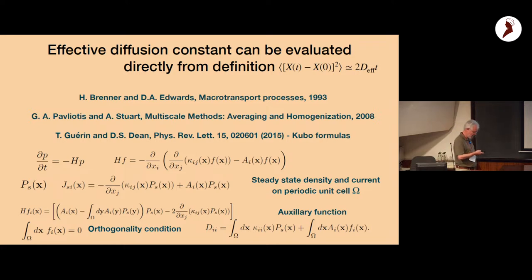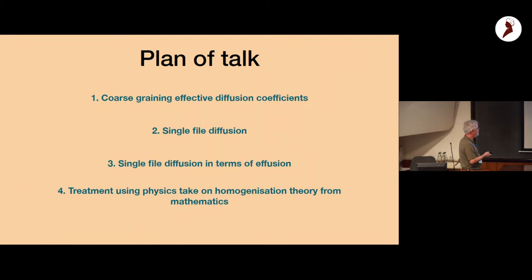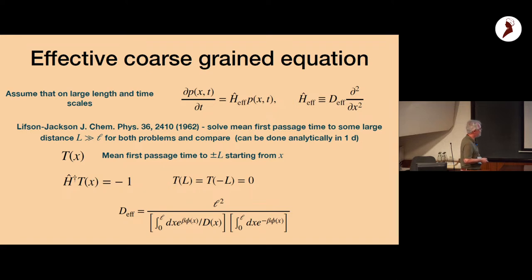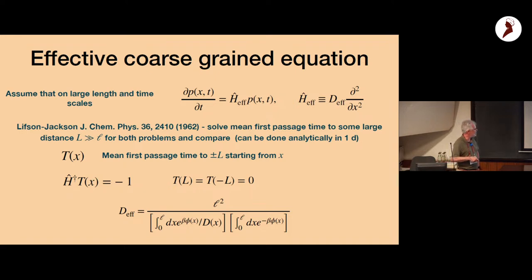Going back to the Lifshitz-Jackson formula, if the force is periodic you can have a drift force. Adding a constant force to this problem — the generalization of the formula — was only solved in the early 2000s, around 2002–2003, by Ryman, Ruby, and various other groups including a German group.